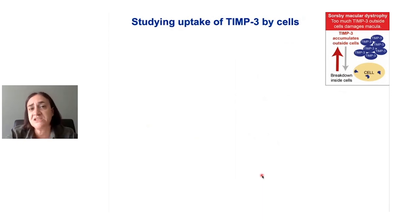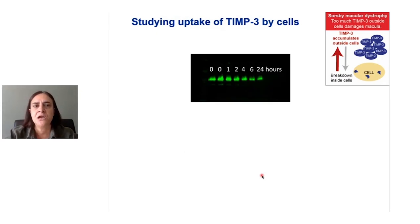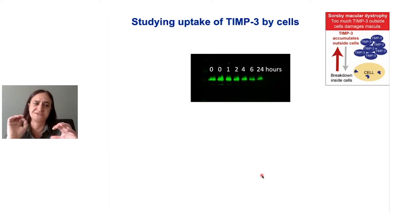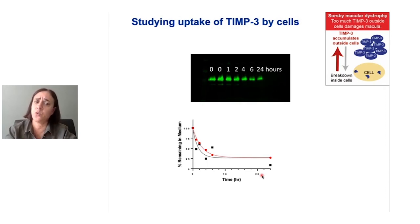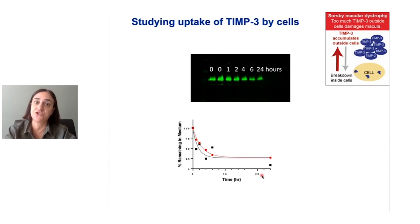We're just starting to look at the uptake of TIM3 — both the normal and variant forms — by retinal pigment epithelial cells. To do this, we add the TIM3 into the environment around the cell, and then over time we take samples to look at how much TIM3 is still present in that environment. What we see is that the amount of TIM3 around cells drops over time as they take it up and break it down. Looking at how fast this happens, we can see it's occurring in the same way as in the chondrocytes when we looked at osteoarthritis — and if anything, it's happening a little bit faster in these retinal cells, which is quite interesting. We're just at the point now where we're starting to compare the normal TIM3 with the Sorsby's macular dystrophy versions, and hopefully I can tell you more about that next year.